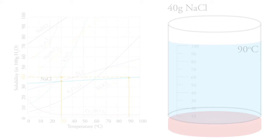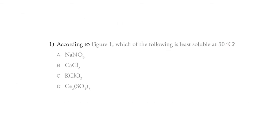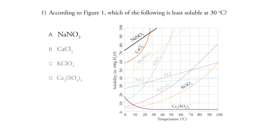All right, so let's get started. So question number one says, according to figure one, which of the following is least soluble at 30 degrees Celsius? And so we have these four to choose from. And when we look at these four, we can see easily it's this one. This is the one that's least soluble at 30 degrees Celsius.